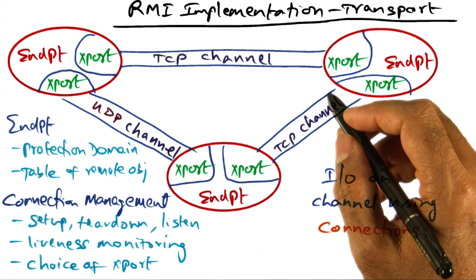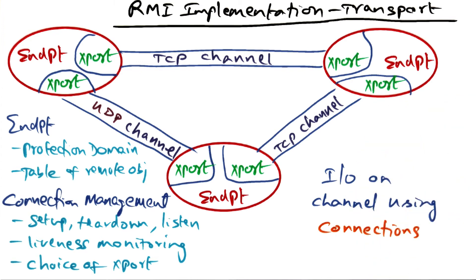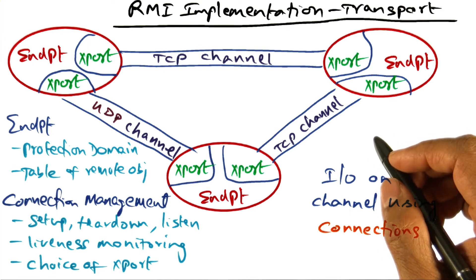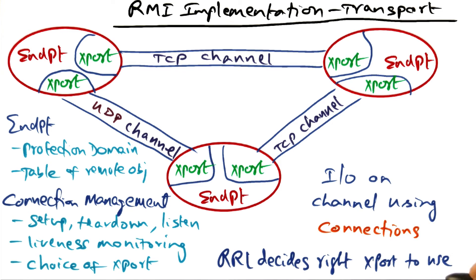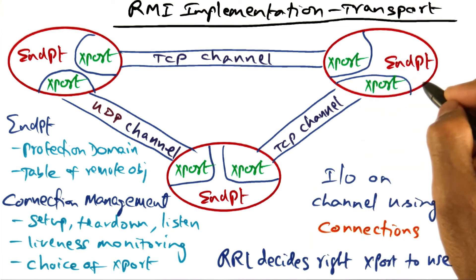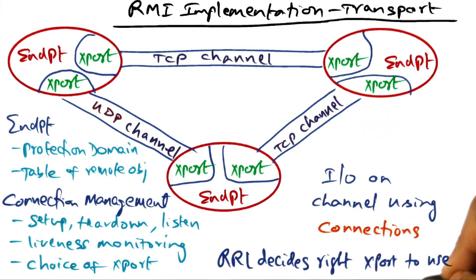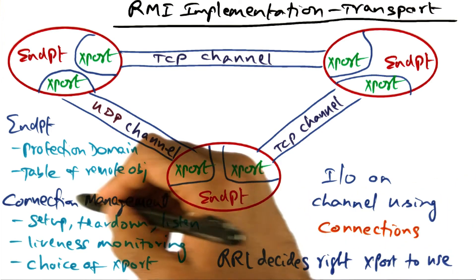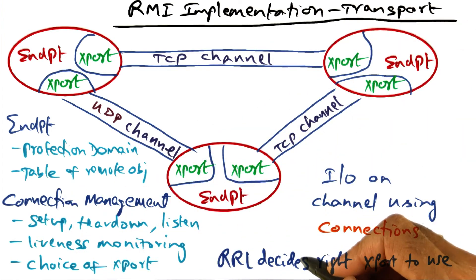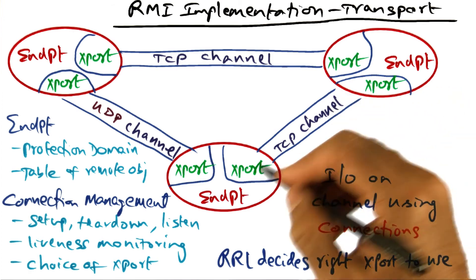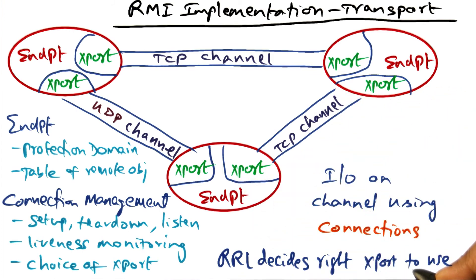That's how the transport mechanism of RMI works. The transport mechanism sits below the RRL layer, allowing all object invocations to happen through the transport layer. The RRL layer decides what is the right transport to use depending on the location of the two endpoints — where the client is and where the server is — whether it should use TCP or UDP, and gives that command to the connection manager so the channel can be established and a connection used for actual transport of the invocation between client and server.